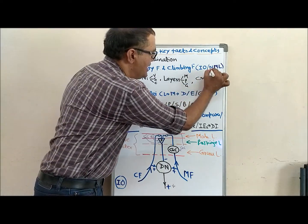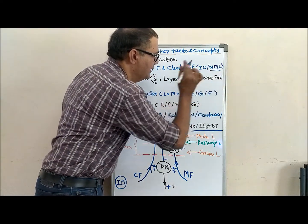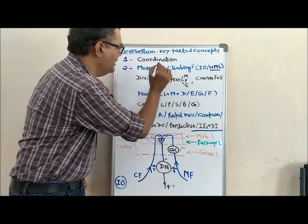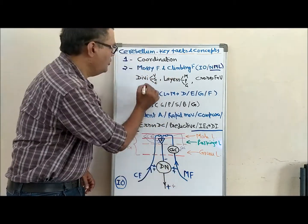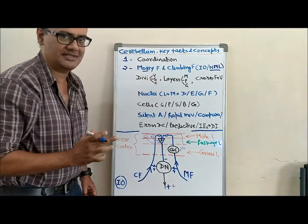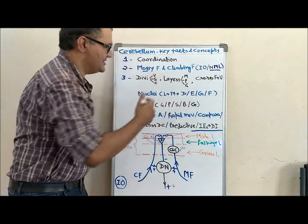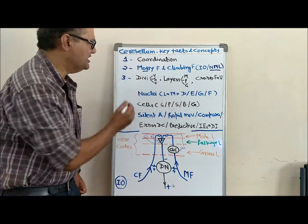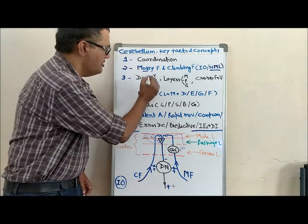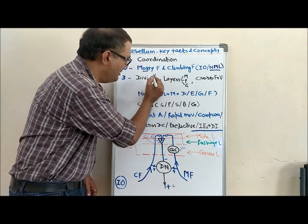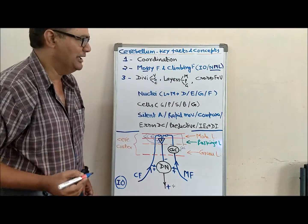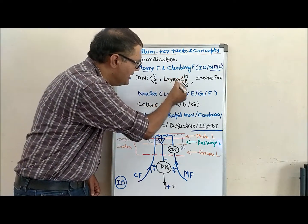All other fibers are called mossy fibers. From three, we have actually three things: cerebellum has three functional divisions - vestibulocerebellum, spinocerebellum, and cerebrocerebellum. Same way, three layers are present in cerebellum cortex.